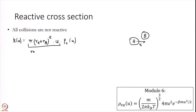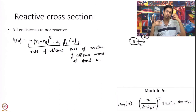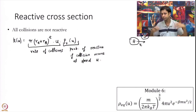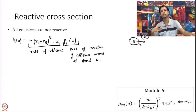This factor is the rate of collisions at speed U, and this P_r(U) is the probability of reaction given that a collision occurs at speed U. What we are saying is: we are having this many collisions per second at speed U, but not all these collisions are reactive. Some of the time A and B will collide and remain A and B — nothing happens. So we are attaching a probability of reacting at any given speed U.